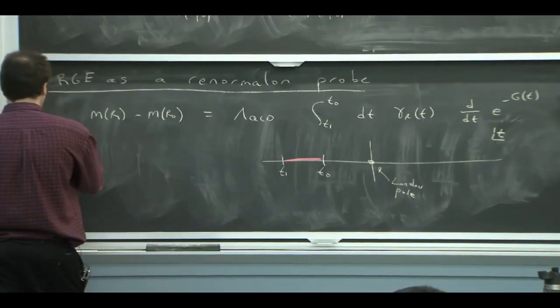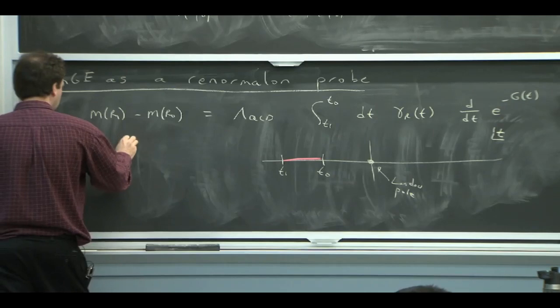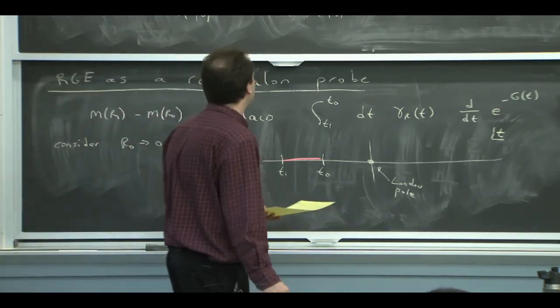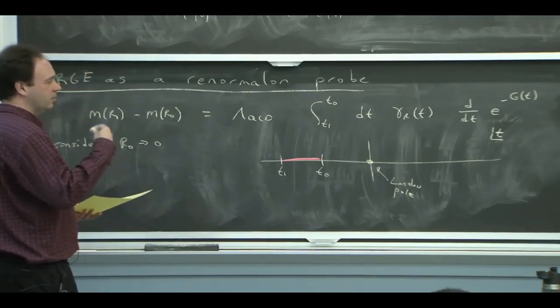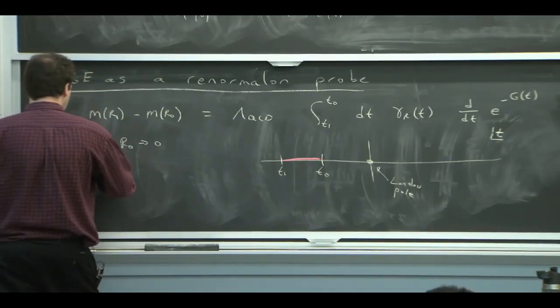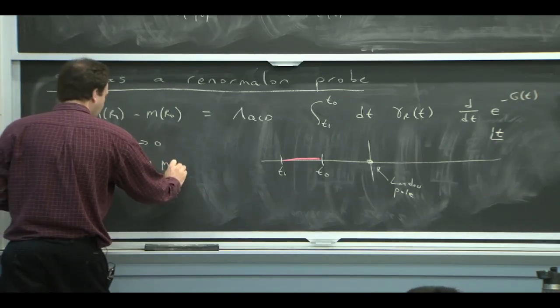So let's consider the limit where R0 goes to 0. If R goes to 0 and you look back at the formula that we had that converts between the MS bar mass and this M of R, you'll see that M of R0 goes to M pole.